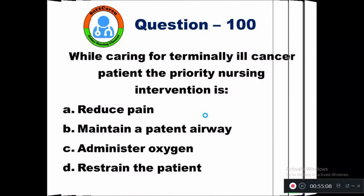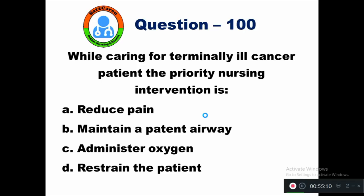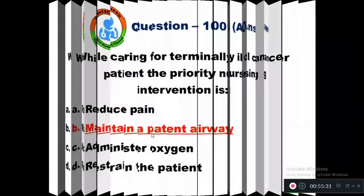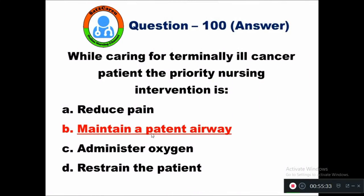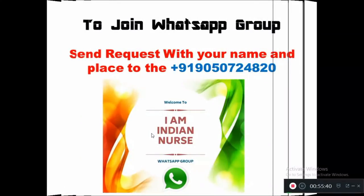Question 100: While caring for a terminally ill cancer patient, the priority nursing intervention is — option A to reduce pain, B maintain a patent airway, C administer oxygen, D restrain the patient. The priority nursing intervention is to maintain a patent airway. Here we come to the end of 100 questions in Part 1. Part 2 video is coming soon — stay with Sattu Karyo Online Nursing Channel.